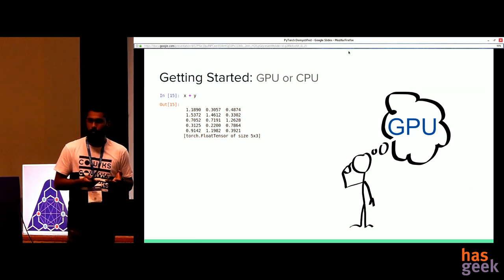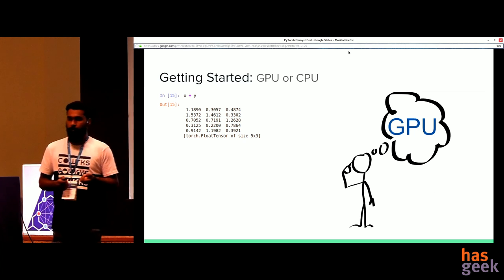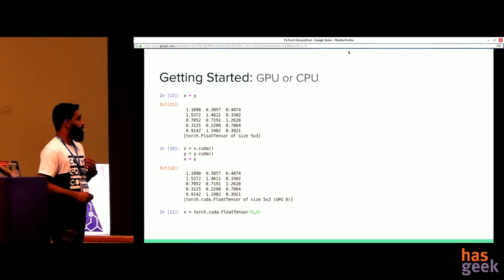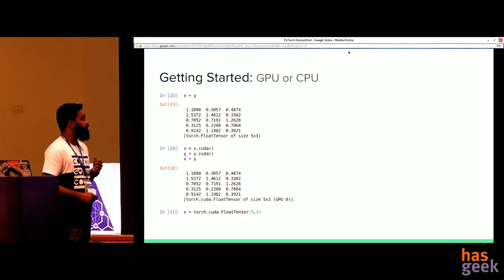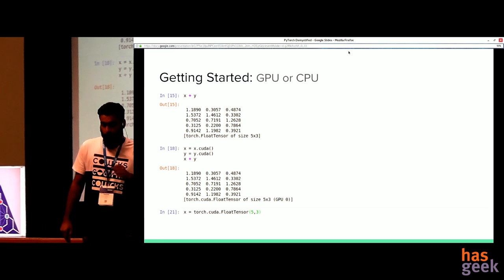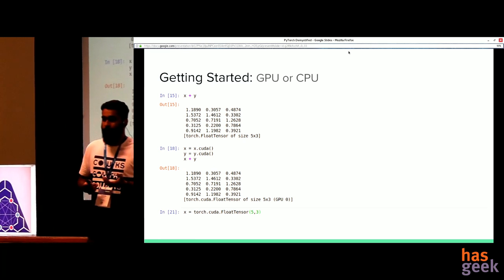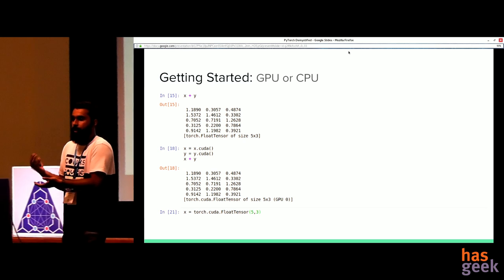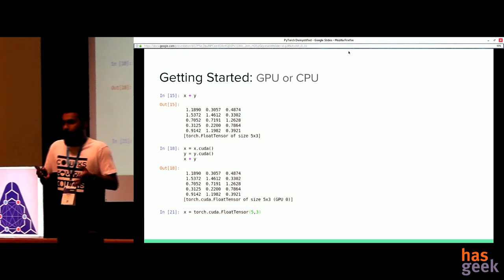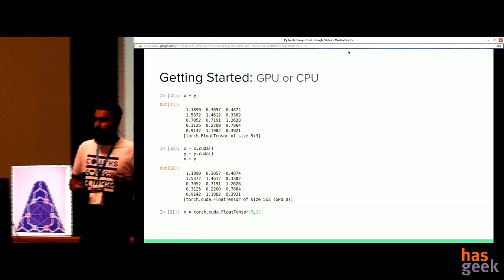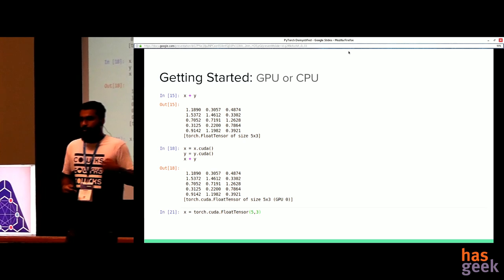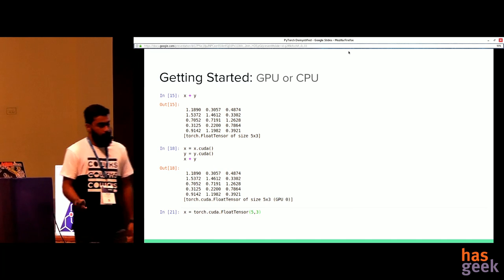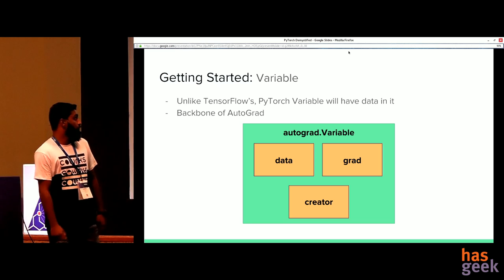When you do x plus y in PyTorch, the operation happens on your CPU. The moment you want to move to GPU, you call x.cuda() and get a GPU tensor back. I've often seen this approach in PyTorch code: people create CPU tensors, do their CPU-optimized operations, then when they need parallelization or GPU optimization they convert to CUDA, do the operation, and if they need the tensor back on CPU they call .cpu() — really handy if you're mindful of CPU vs GPU optimization.